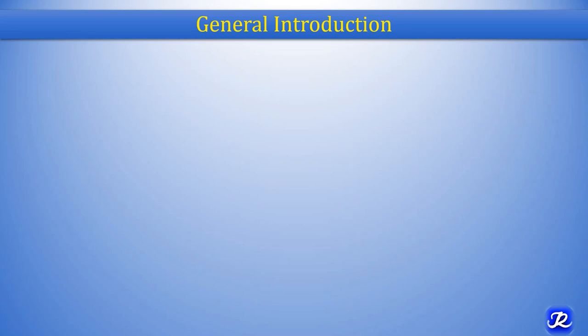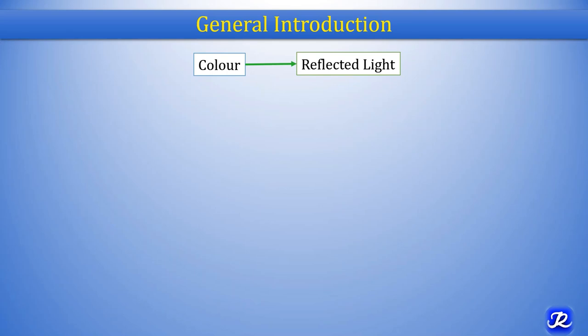What is colorimetry? It is related to color. Colorimetry refers to the measurement of intensity of color. What is color? Color is what the eyes see when light is reflected off an object. Color is a reflected light.